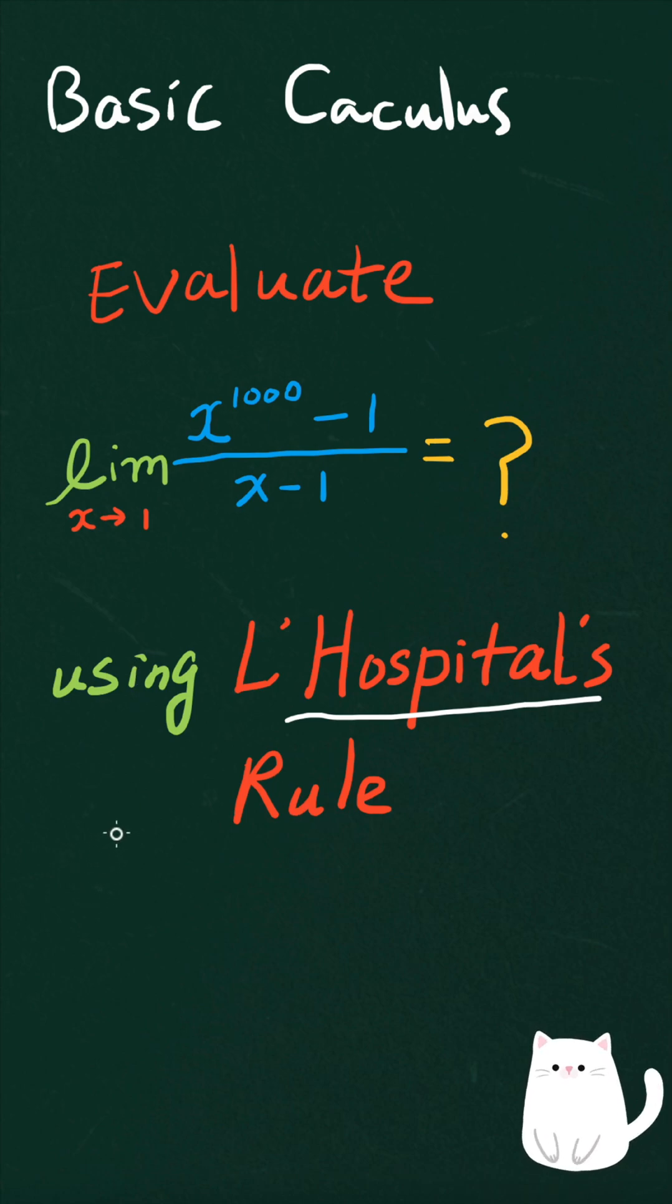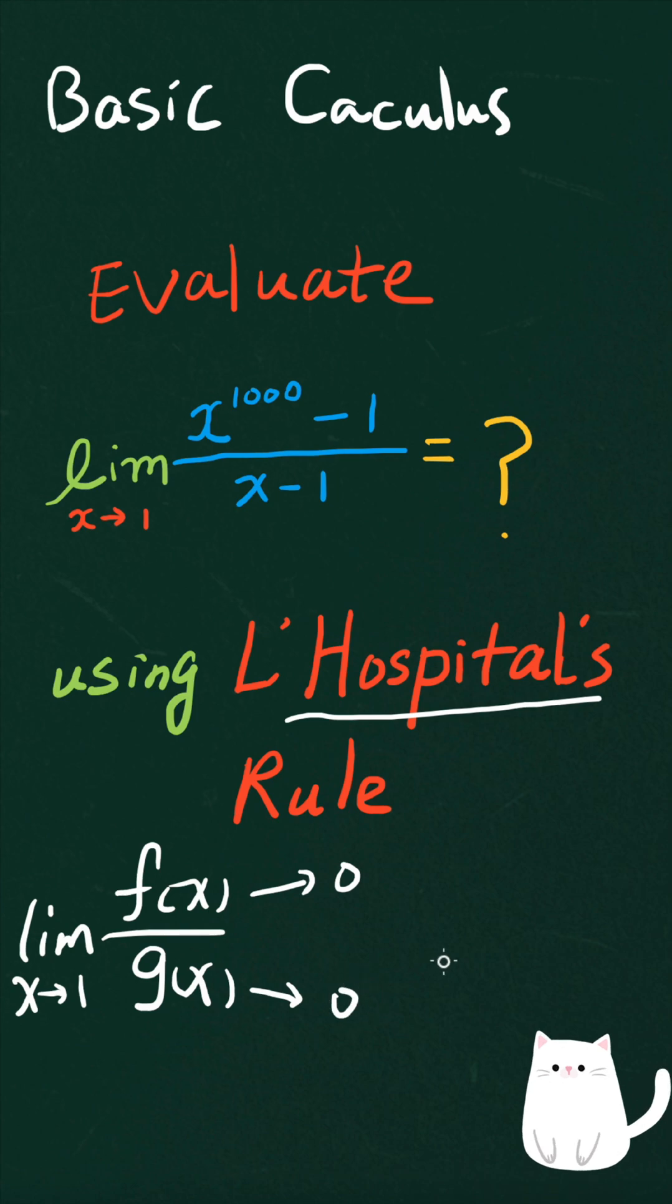So what L'Hôpital's Rule says is that when you have a quotient with fx divided by gx, when you want to get the limit of such expression as x approaches 1, then if the limit of fx approaches 0 and the limit of gx also approaches 0, then you have an indeterminate 0 over 0 expression. And when you have this condition, you can apply L'Hôpital's Rule.